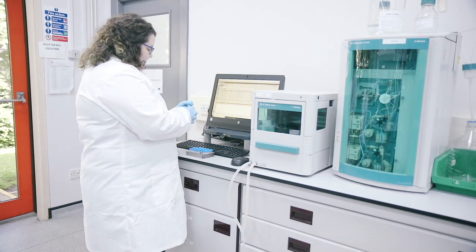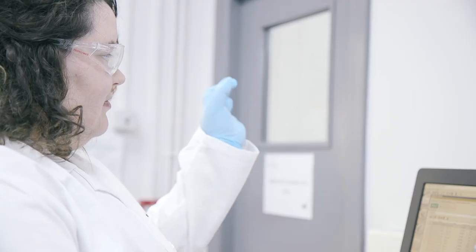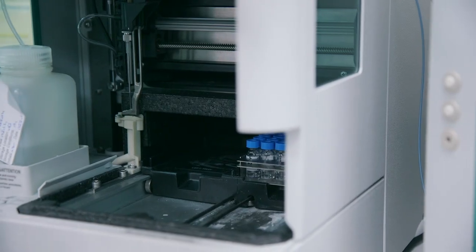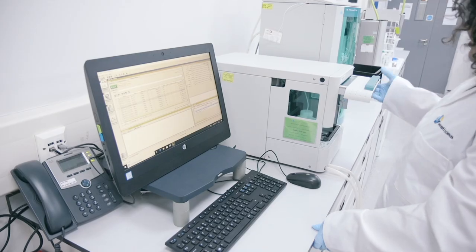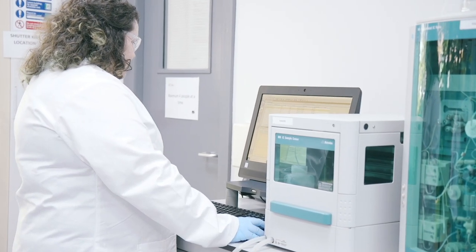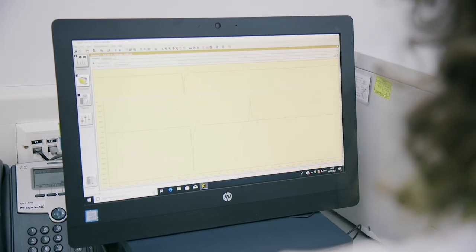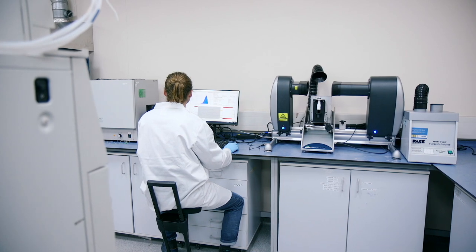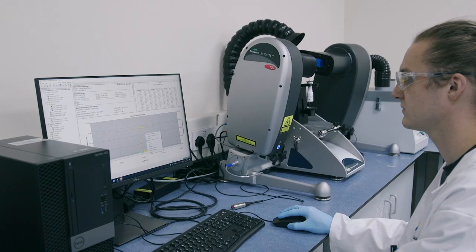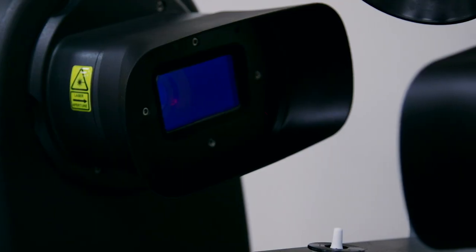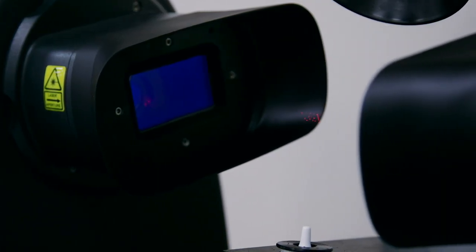Our Metrohm ion chromatograph enables us to quantify cations and anions in test sample materials. This system offers pulsed amperometric detection, which is particularly relevant for sugar quantification. We often use this system for lactose and mannitol analysis. This is the Malvern Panalytical Spraytec, a laser diffraction system which measures spray particle and droplet size distributions as part of product development for sprays and aerosols.